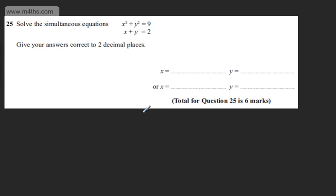This is question number 25, and it carries six marks. We're asked to solve the simultaneous equations: x squared plus y squared equals 9, and x plus y equals 2. We're asked to give our answers correct to two decimal places.